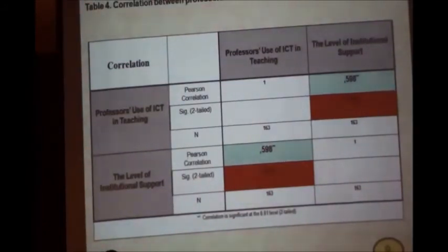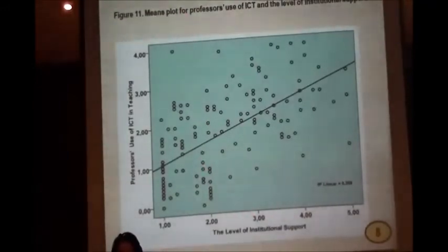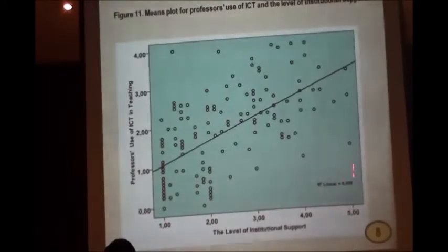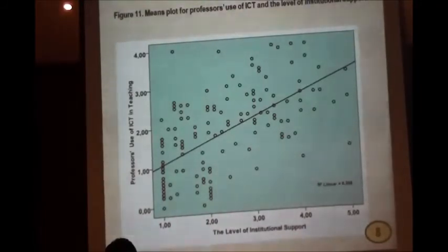A scattered plot makes this clear: data points scattered around a straight line indicating a positive correlation. The coefficient of determination is 0.35, meaning 35% of the variability in professors' use of ICT can be explained by the level of institutional support. The remaining 65% is explained by other variables such as teachers' age, teaching experience, computer training, gender, and teachers' attitudes — whether positive or negative — toward the use of ICT. Due to time constraints, these variables cannot all be covered in this presentation.